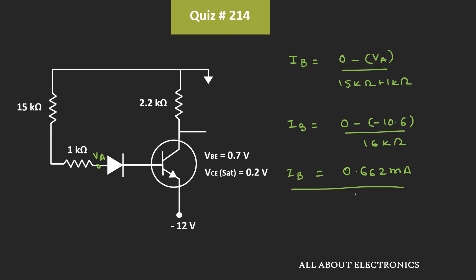That means 0.662mA will be the value of the base current. Now if this transistor is operating in the active region, then the collector current Ic should be equal to β times Ib, that is equal to 30 times 0.662mA. If we calculate the value, then the collector current Ic should be equal to 19.8mA.